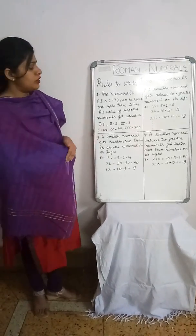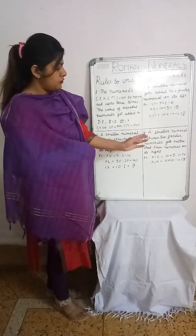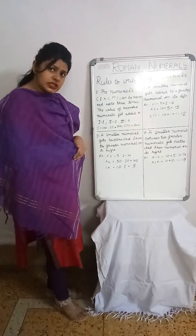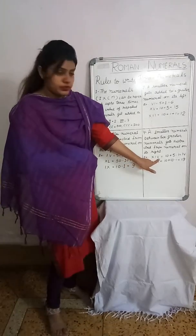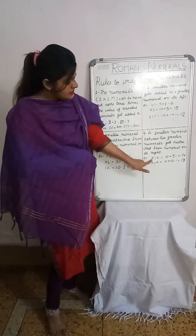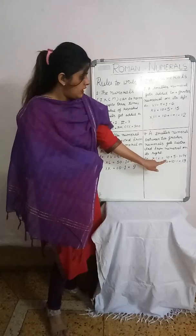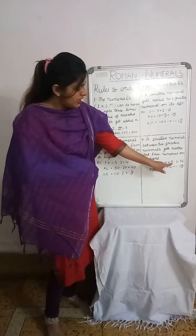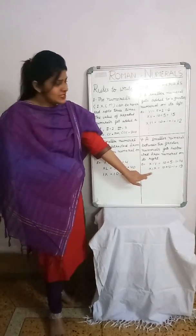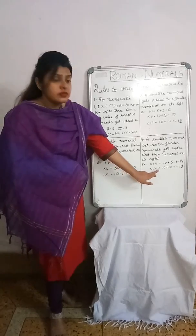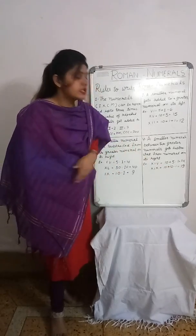Rule 4: A smaller numeral placed between two greater numerals gets subtracted from the numeral on its right. For example, XIV: I is between X and V, so we subtract I from V — giving 10 + 5 − 1 = 14. Another example, XIX: I is between X and X, so I is subtracted from the X on its right — giving 10 + 10 − 1 = 19.